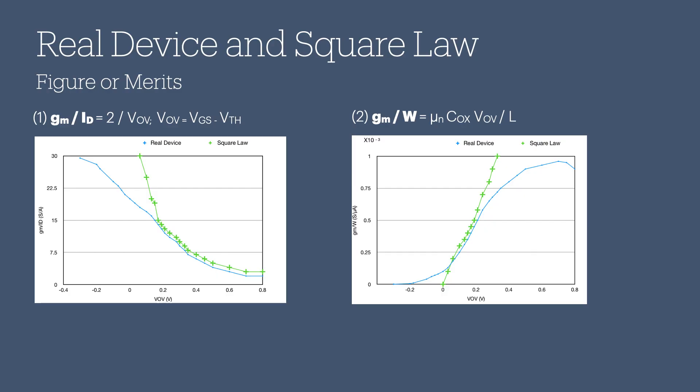Same with GM over W. The square law equation is only valid for a certain range of values, from 0 to around 0.4 volts of overdrive voltage.